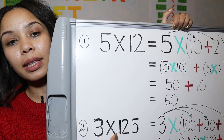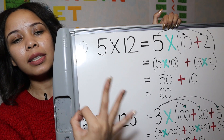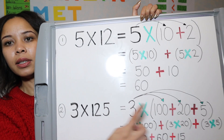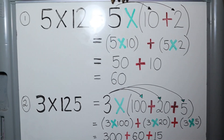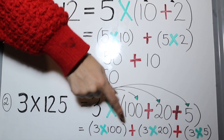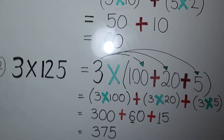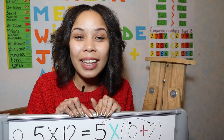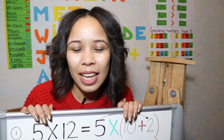Let's look at another example: three times one hundred and twenty-five. One hundred and twenty-five is a three-digit number, which means I should have three separate numbers in my bracket: one hundred plus twenty plus five. So I write three times one hundred, three times twenty, and three times five, then add them all up and my final answer is three hundred and seventy-five. There's also another method you can use called the hashtag method, which I'll show you in the next example.